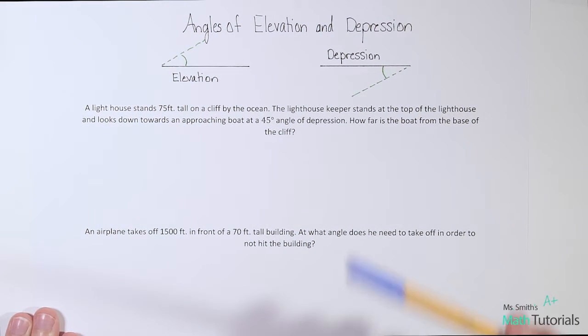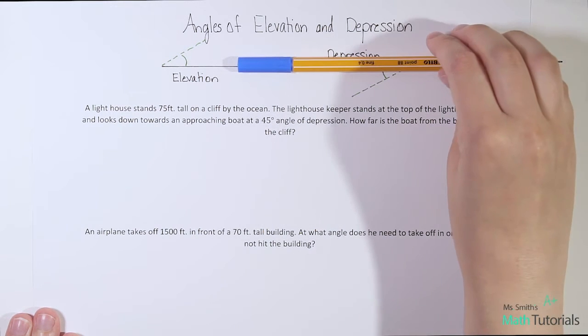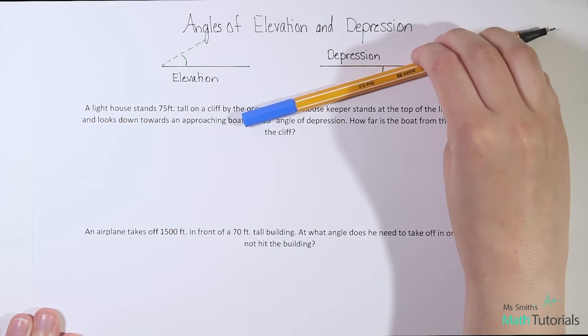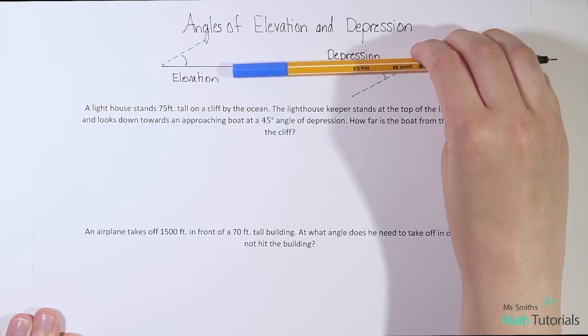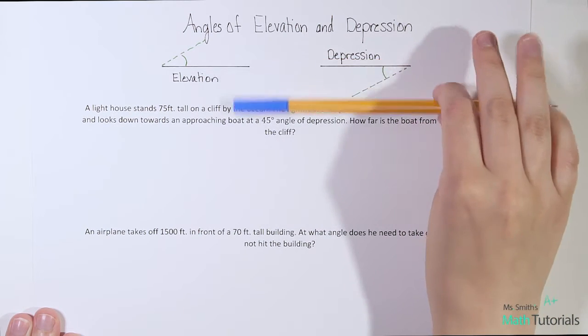Depression is when we're starting from a flat horizontal line and we move down. You can move down this angle or you could move down the other way, but either way, you're going to move downwards.